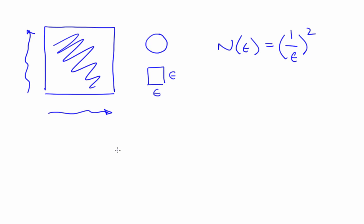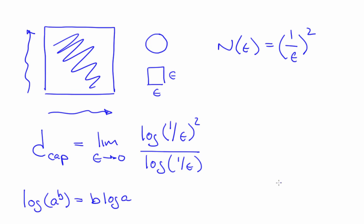If we plug that back into the capacity dimension definition, that's what we get. And then you need to use one of the tricks that you may remember from logs, which is log of a to the b is b log a. That will bring the 2 down here, and then these terms cancel, so the answer is 2. And that's also good. Remember, we want the fractal dimension to collapse down to the topological dimension if we're calculating the fractal dimension of an object that is not fractal.